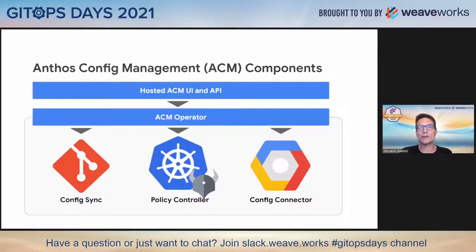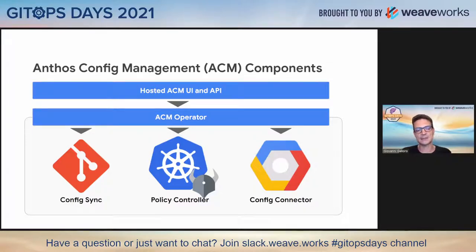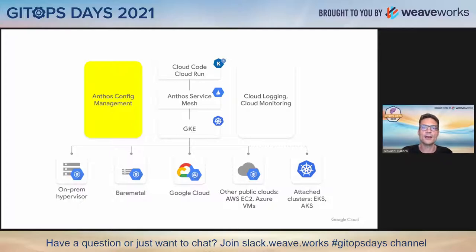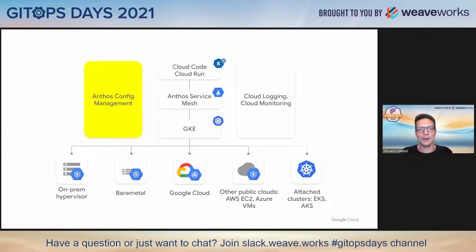On Google Cloud, one way to accomplish this is the use of Anthos Config Management, which has three components: config sync, policy controller, and config connector. I will describe config sync more in this talk. Anthos Config Management is part of Anthos, the Google application modernization platform that has Kubernetes as its foundation. It extends the possibility of having a Google-provided Kubernetes platform outside and beyond Google Cloud.